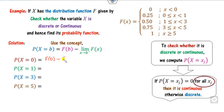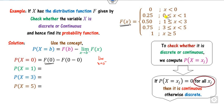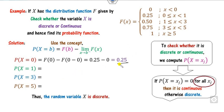So P(X = 0) = 0.25 − 0 = 0.25, which is non-zero. Hence this is a discrete random variable, not a continuous one — because for a continuous random variable, probability at a single point must be 0. For x = 1: F(1) = 0.50 and F(1⁻) = 0.25, so P(X = 1) = 0.25. Similarly you can find P(X = 3) and P(X = 5).